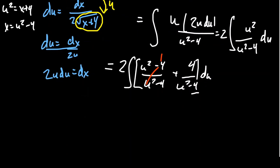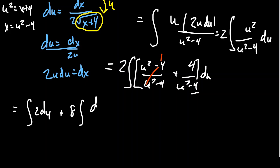So we end up with the integral of 2 du plus 8 times the integral of du / (u² − 4). For the second integral, I'm going to use partial fraction decomposition — writing 8/(u²−4) as A/(u−2) + B/(u+2).